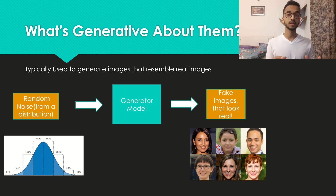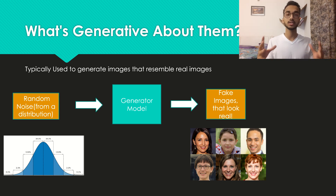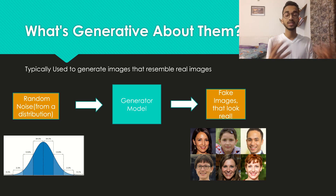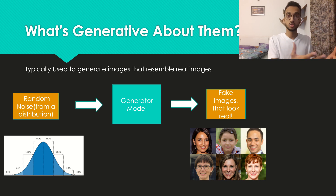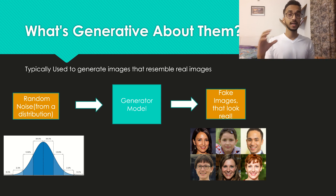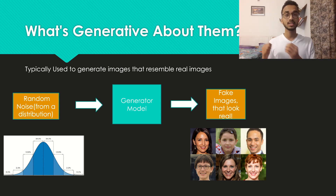Initially this might seem very confusing because you might be thinking how can we take some random numbers and just make an image out of it. But if you pause and think about it more clearly, it makes absolute sense. Because what is an image? It's just a bunch of pixels arranged together. A pixel is just a number which denotes the color or intensity of the image. If you arrange the numbers randomly you'll get a random image which makes no sense to a human. So the GAN arranges the numbers in a way which looks real to a human, using real images in the dataset as reference.